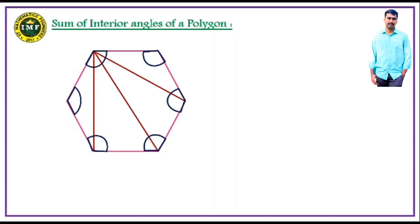Since there are four triangles, and in each triangle the sum of angles is 180°, the sum of the interior angles of the hexagon is 4 × 180°. Since the hexagon has six sides, it is divided into four triangles — two less than the number of sides — giving us 4 × 180°.